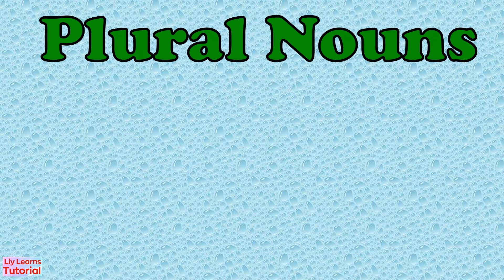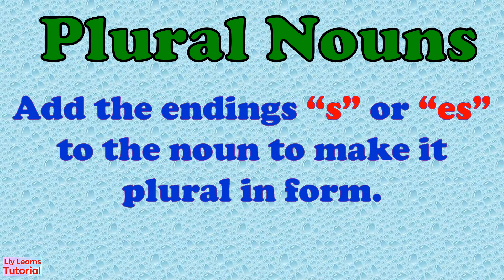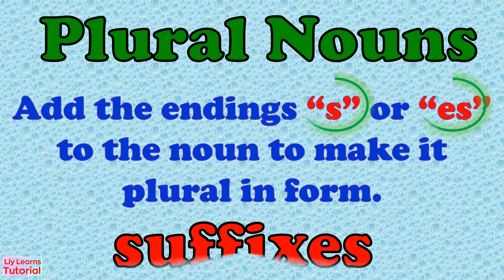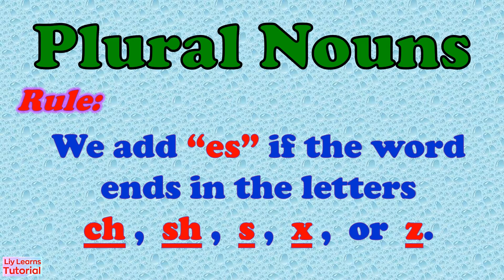When we want to show that there is more than one of something, we add the endings "-s" or "-es". Endings like these are called suffixes. We add "-es" if the word for the single thing ends in the letters "-ch", "-sh", "-s", "-x", or "-z".